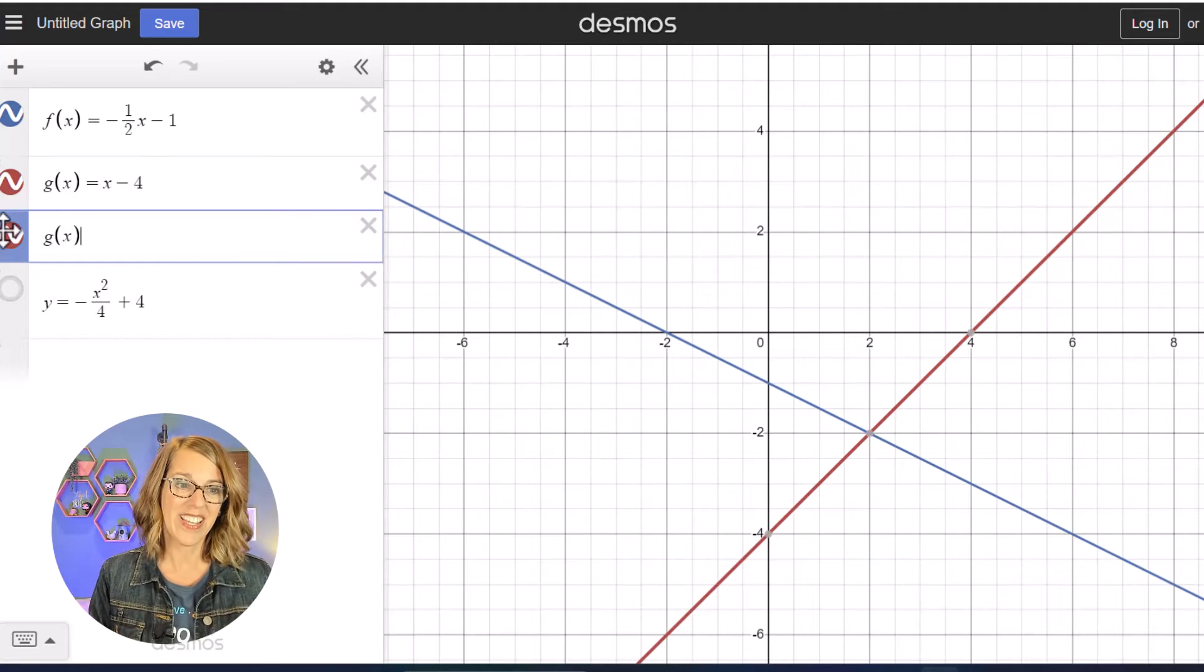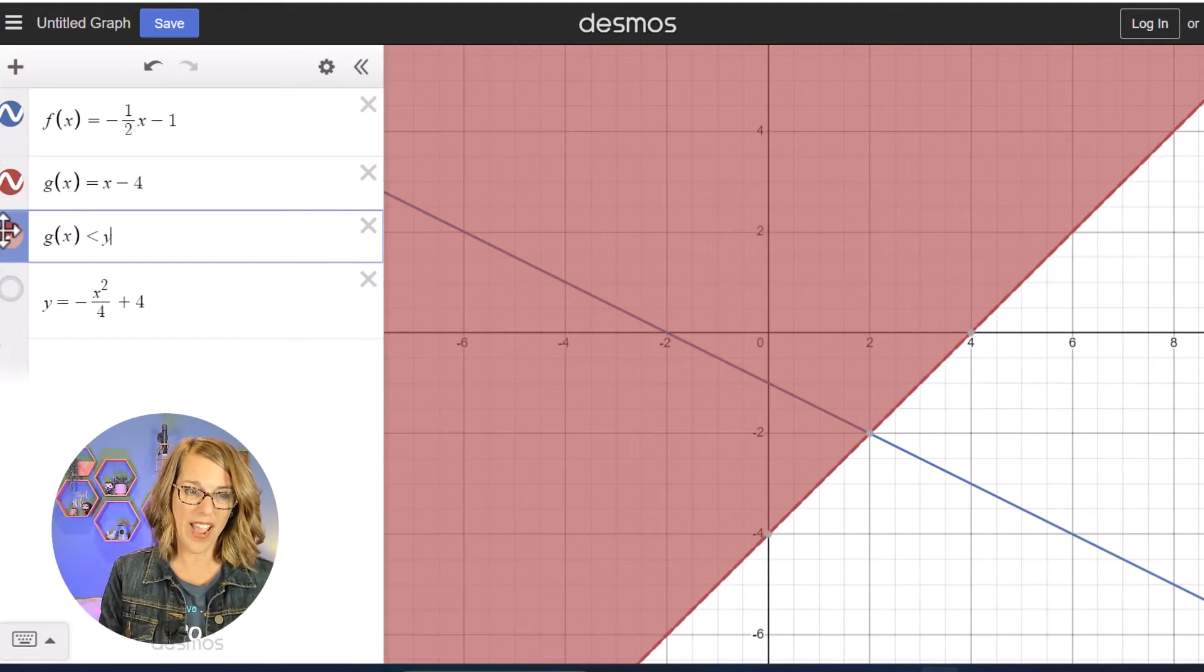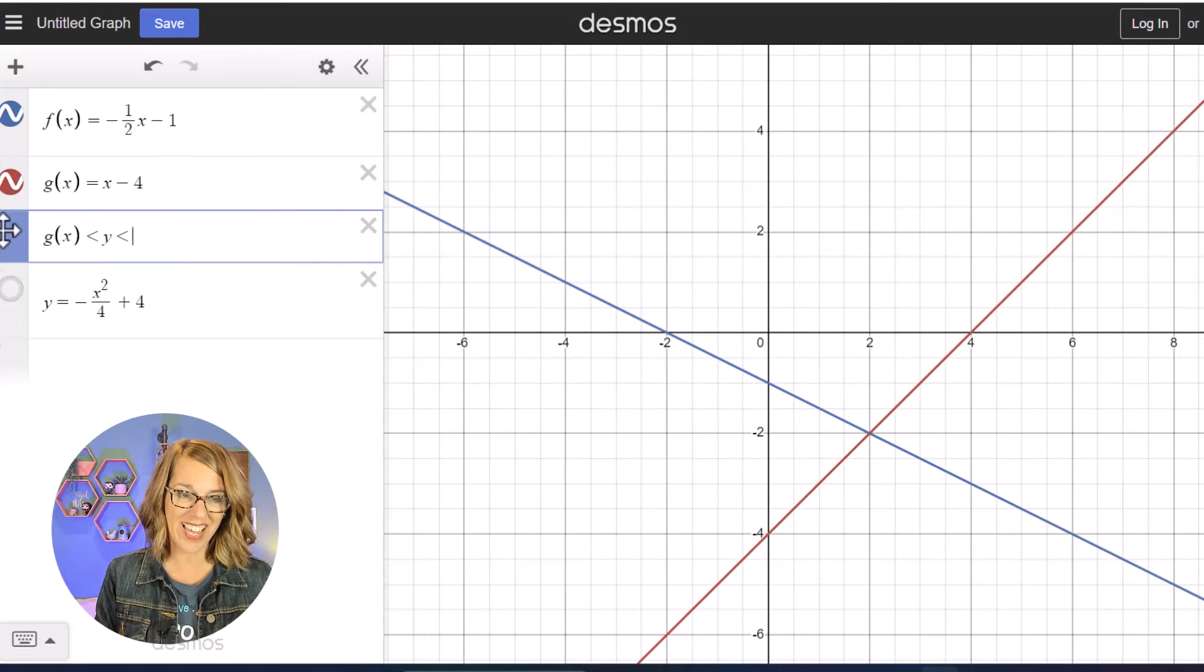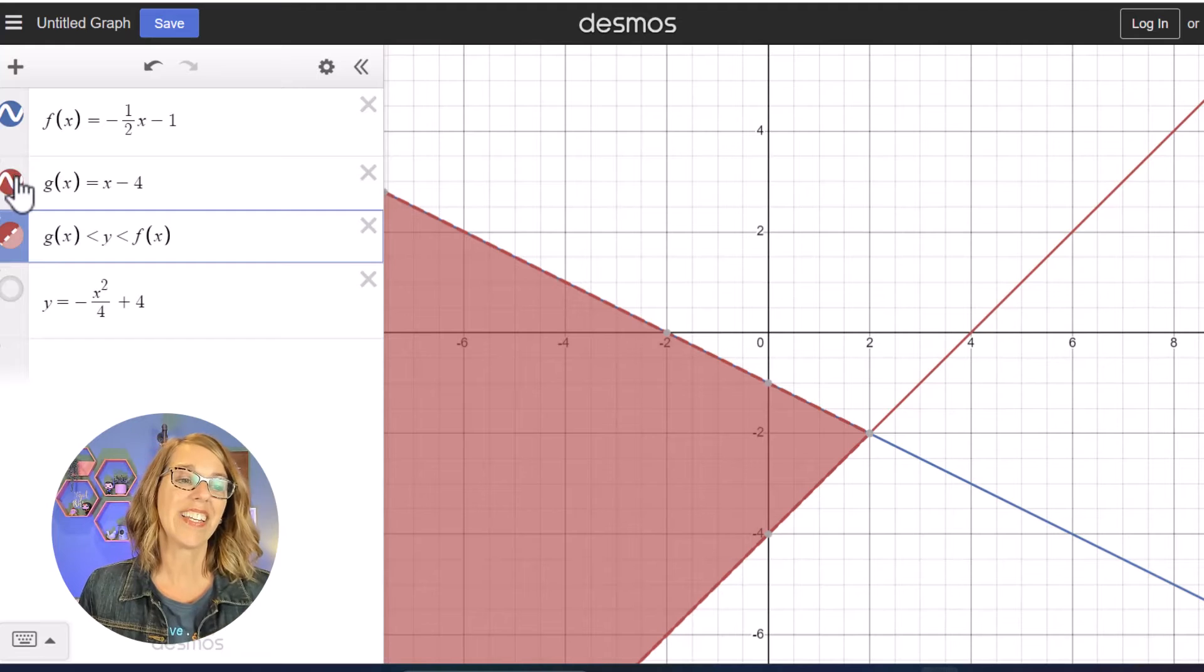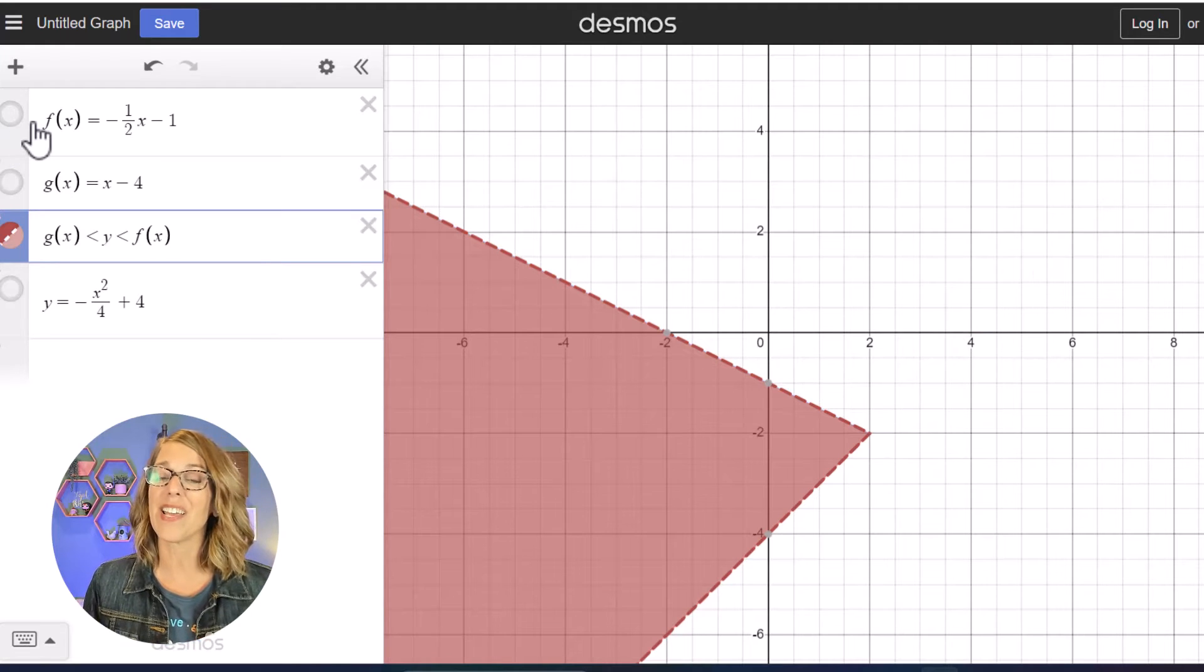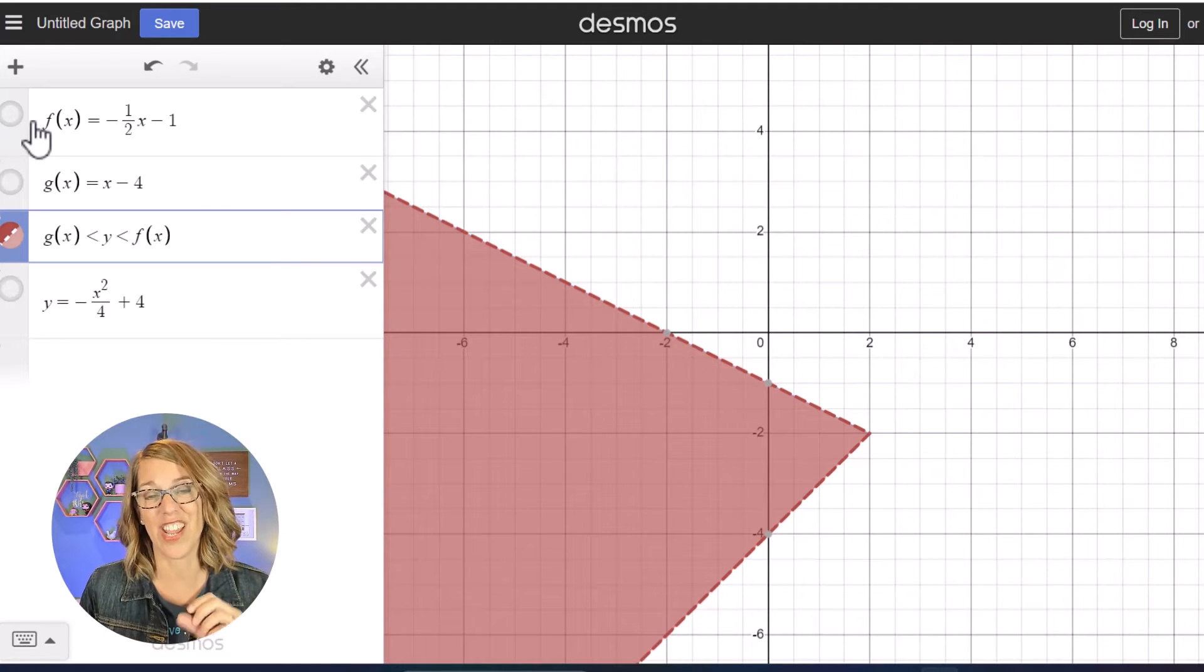So that's gonna be G of X is less than my Y values is less than my F of X values. I can click off of these lines and I'm left with just the shading.